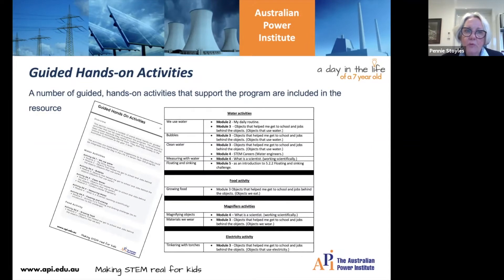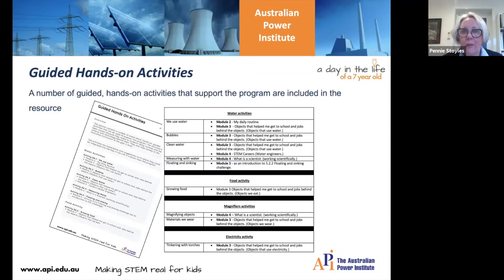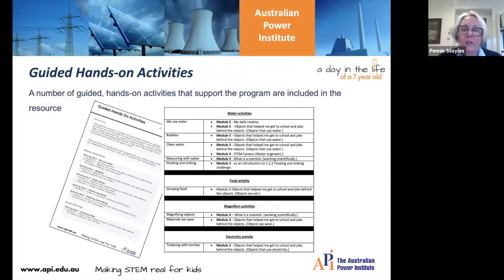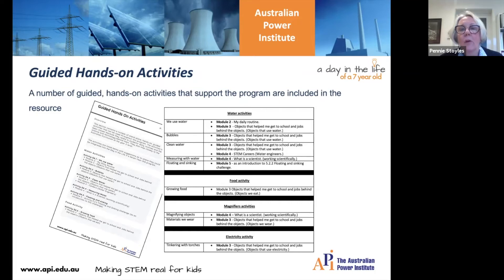In module five the students are doing open-ended inquiry but they haven't actually done any guided inquiries. So you may wish to include some of these activities throughout the program, or you could use them at the beginning or the end — it's really up to you. There's a table showing suggestions of where the activities could be included. For example, there's a 'we use water' activity that gets students to measure and think about the number of times every day that they use water, and that could fit into their daily routine or into module three where they're looking at objects that use water.